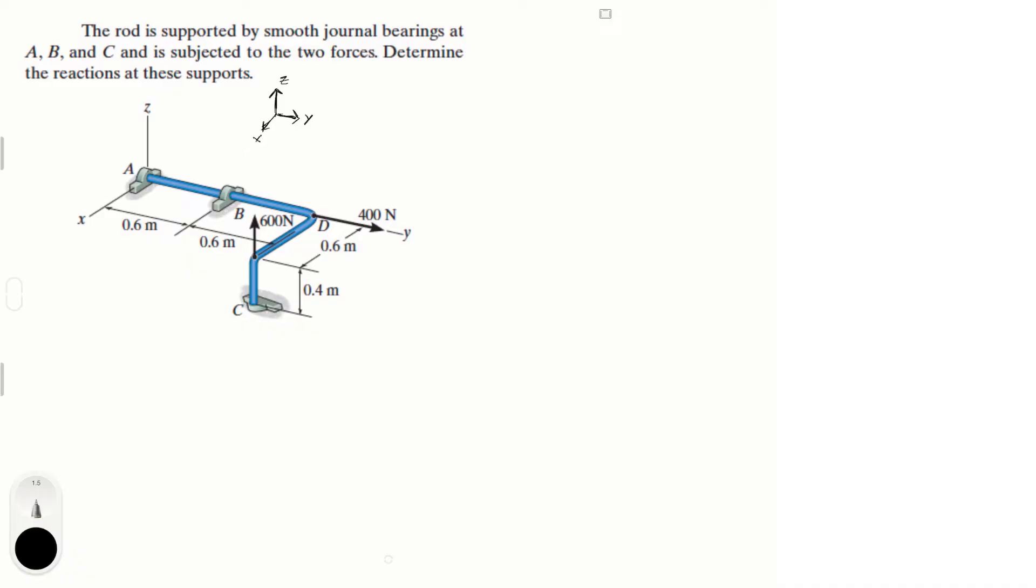The journal at A has a reaction in the positive z and positive x. The journal at B has a reaction in the positive z and positive x, and these two have no reaction in the positive y direction. The one at C has a reaction in the positive x and positive y. These are the reactions of the bearings and all the forces we need to find.